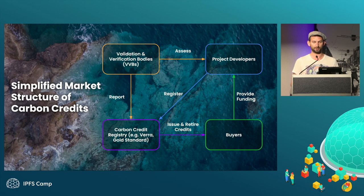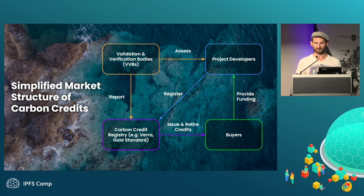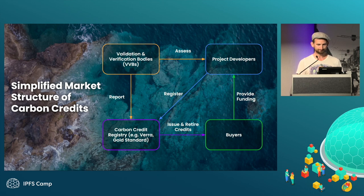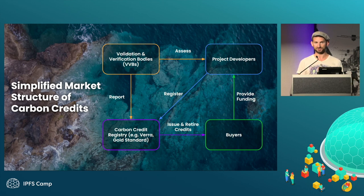This is a simplified market structure for how the carbon markets work. On the bottom left-hand corner, you have the carbon credit registries — the issuers of the underlying assets. You may have heard of names like Vera or Gold Standard. They issue the underlying credits to project developers who register through a paperwork process, and they provide a list of approved VVBs, or validation and verification bodies, who are responsible for auditing the projects, collecting data about what the projects have done, and reporting that data back to the registry so that credits can be issued once verification is complete. And then you have buyers who provide money into the system — they want to support climate action.